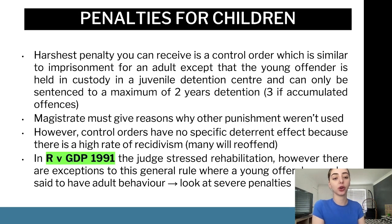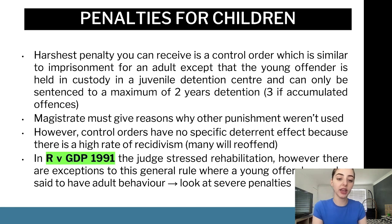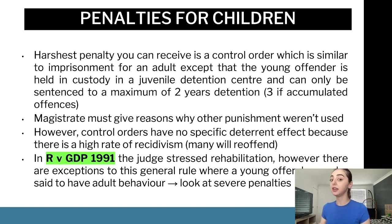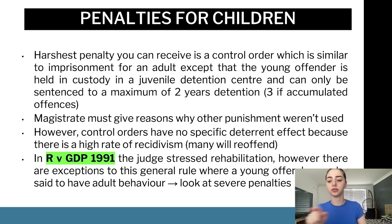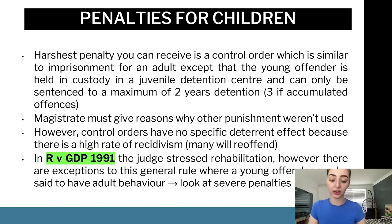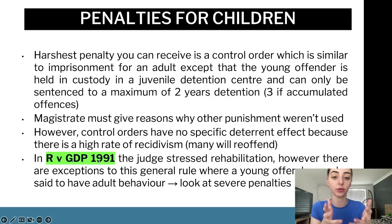The harshest penalty a young offender can receive is a control order, similar to imprisonment for adults, where the young offender is held in a juvenile detention centre. The maximum sentence is two years, or three years for multiple offenses. The magistrate must give reasons why other punishments weren't used. However, control orders have limited specific deterrent effect due to high rates of recidivism. In R v GDP, the judge stressed rehabilitation over retribution, which is a great case to cite when discussing the aims of the court.